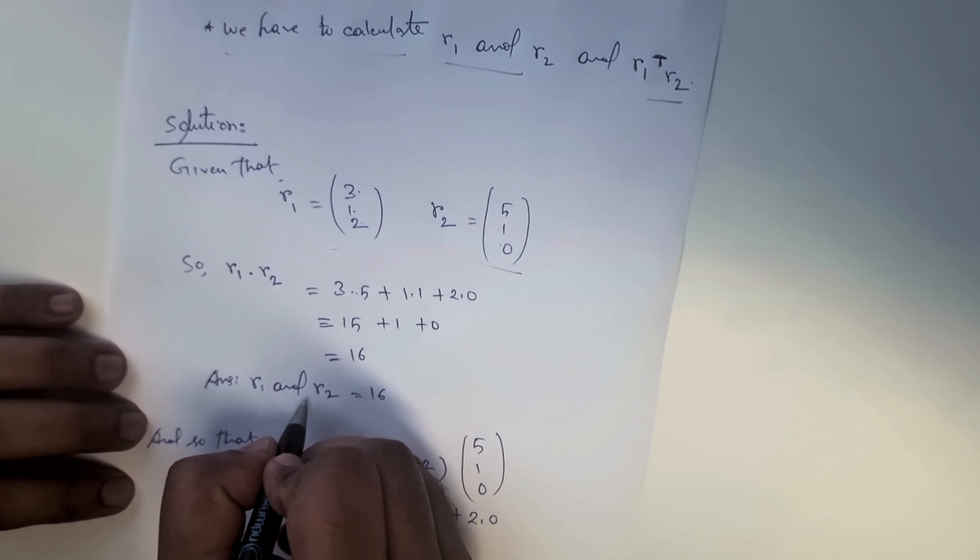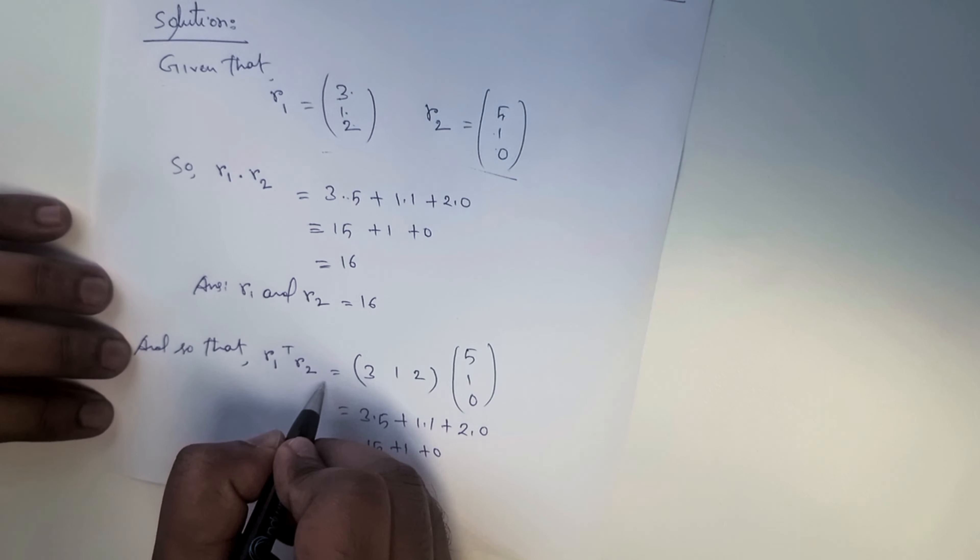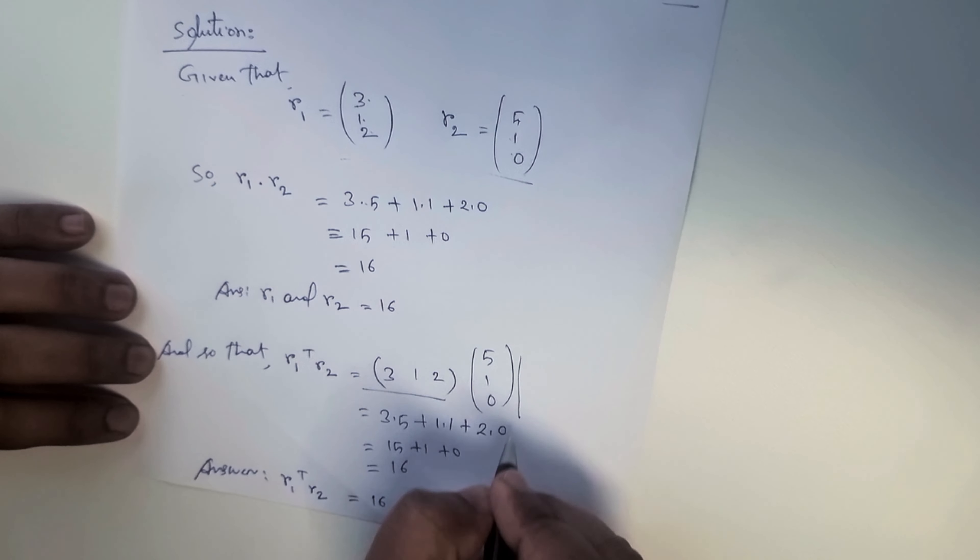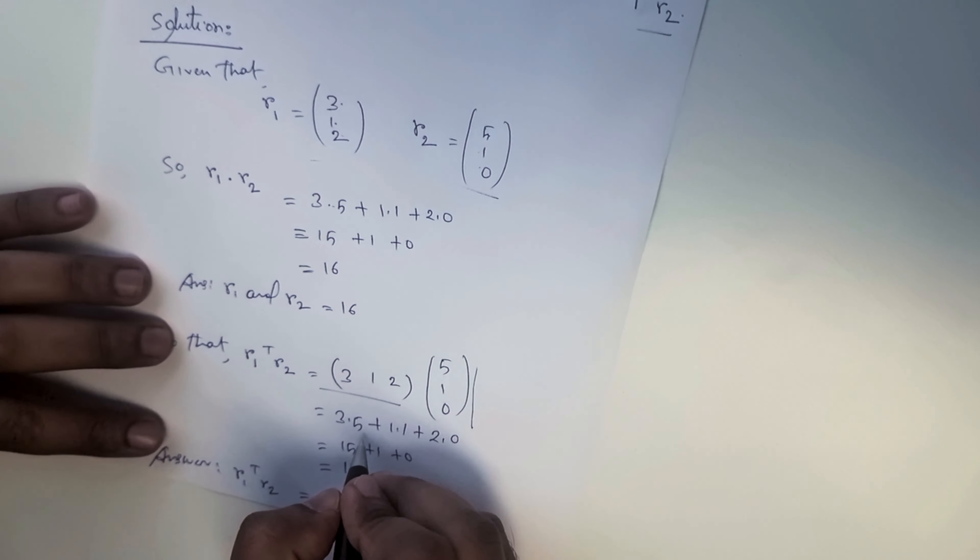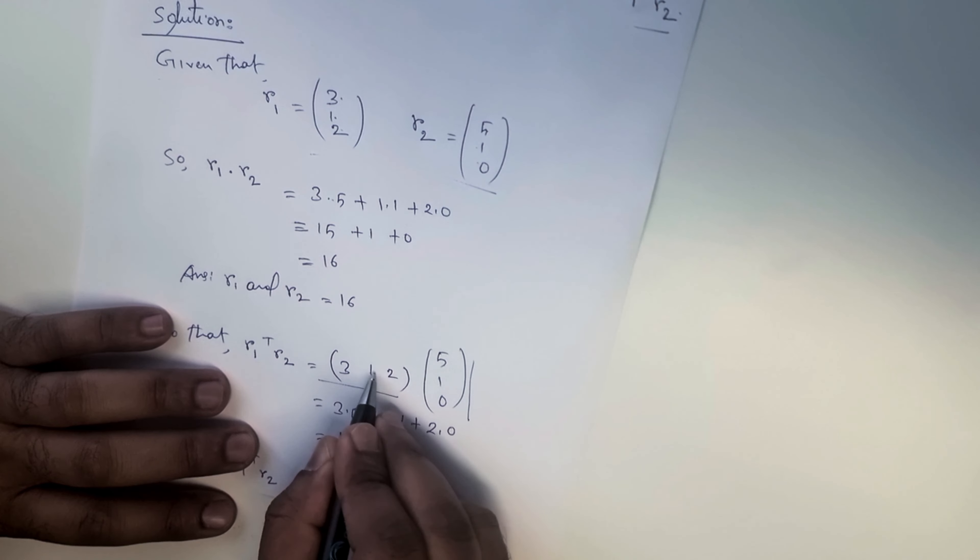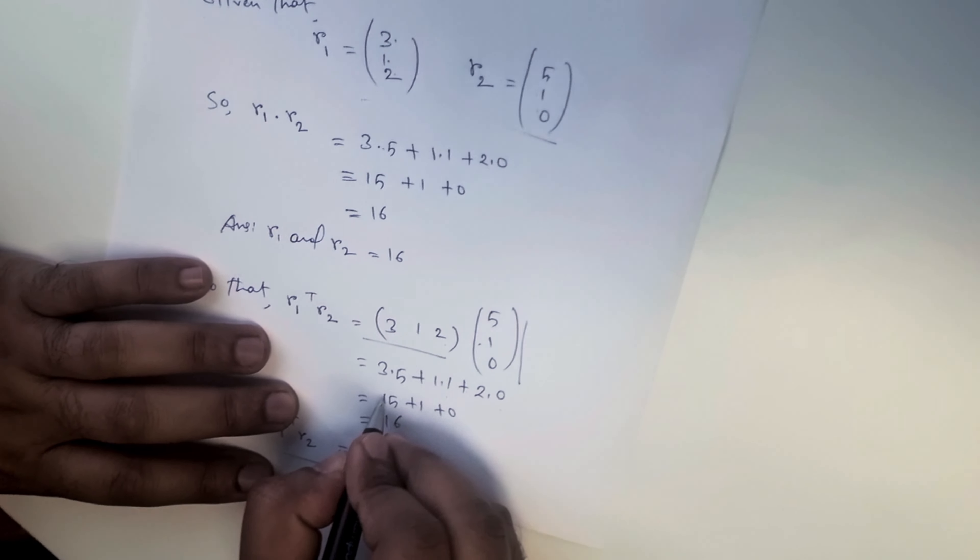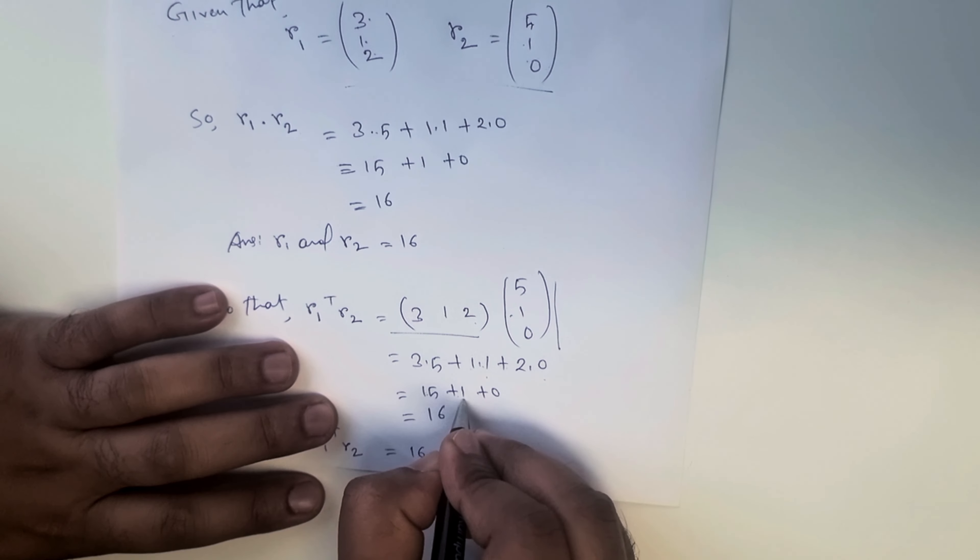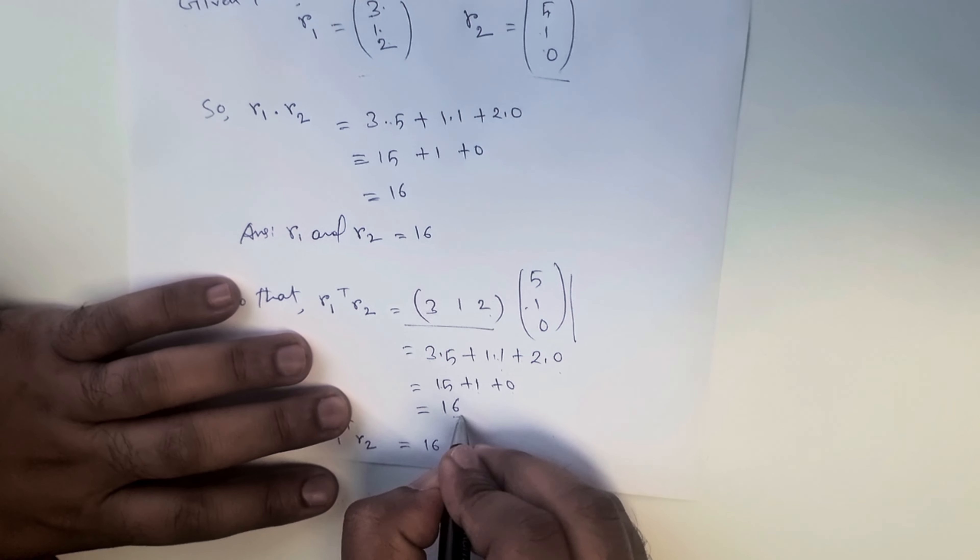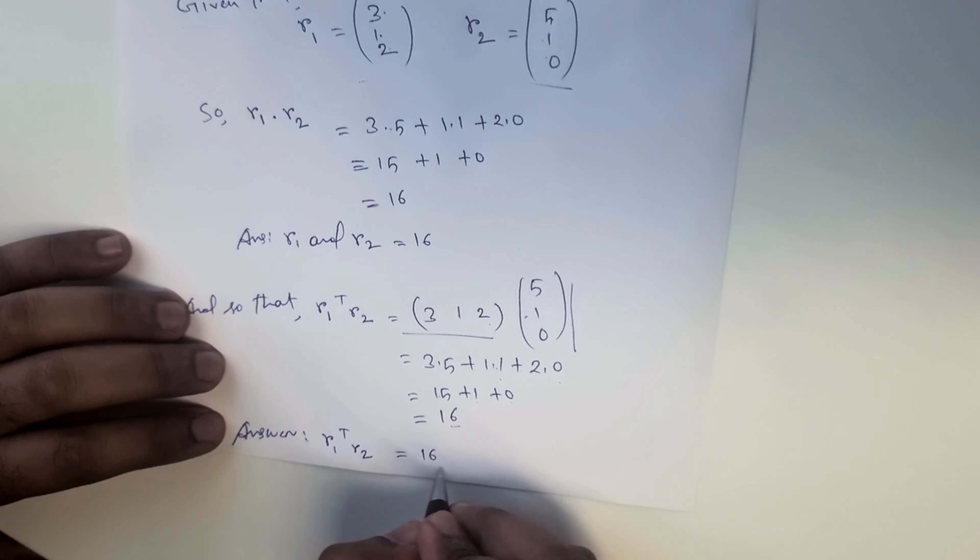The next solution: r1 transpose r2. Here is the r1 values and this is the r2 values, so we multiply. 3 into 5 is 15, 1 into 1 is 1, plus 2 into 0 is 0, so the total sum it's 16. So this is the answer of r1 transpose r2: 16.